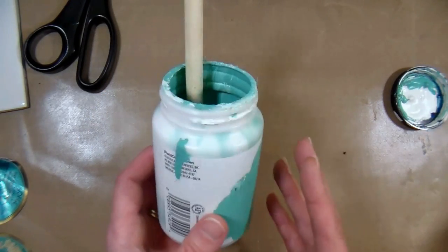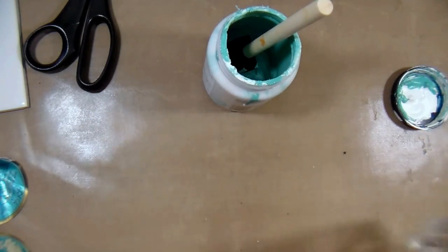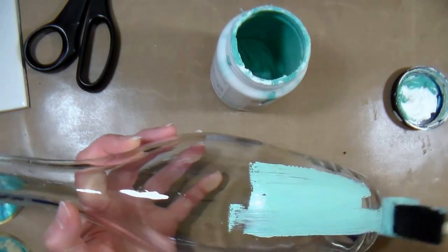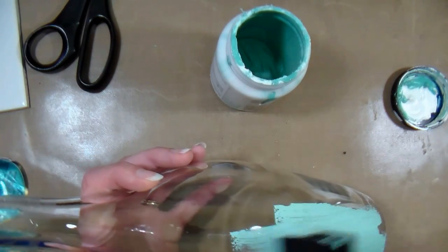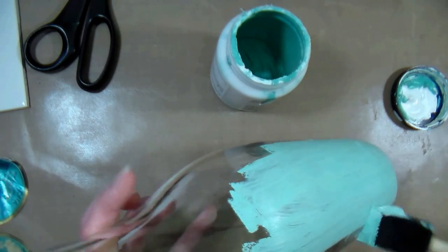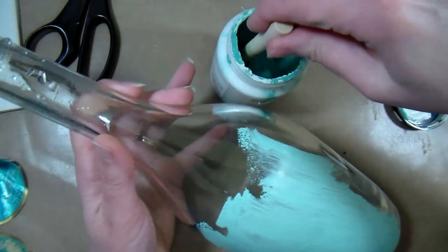I have a custom color that I mixed that's actually pretty thick so hopefully it'll spread on my glass all right. I did just wash my bottle with dish soap and I'm just going to spread this on and then I might actually wipe a little bit off to distress it afterwards.